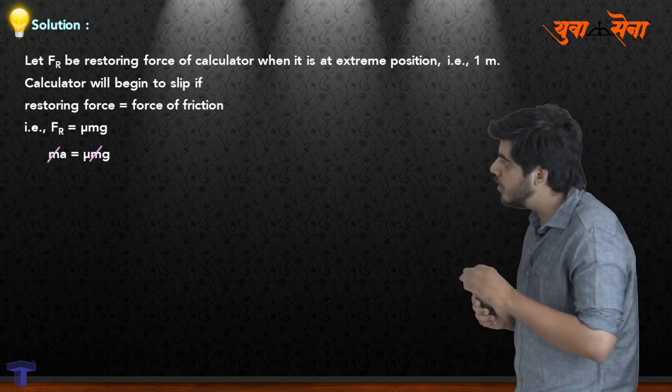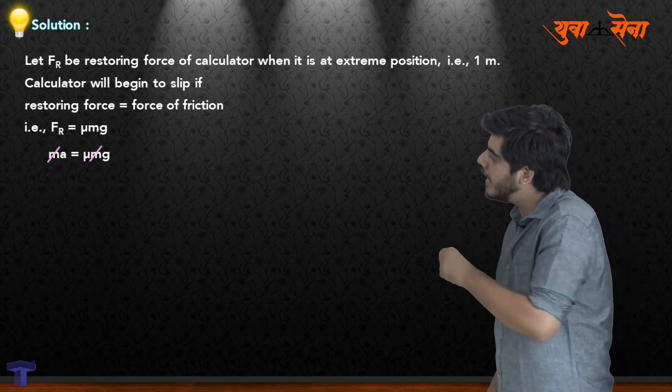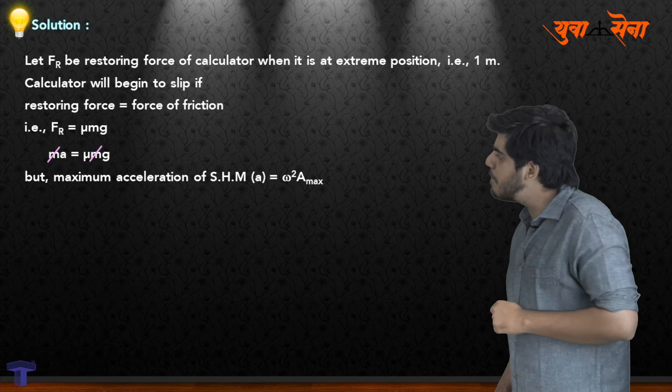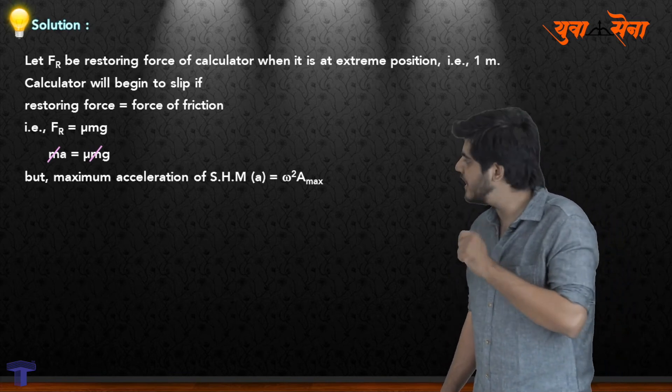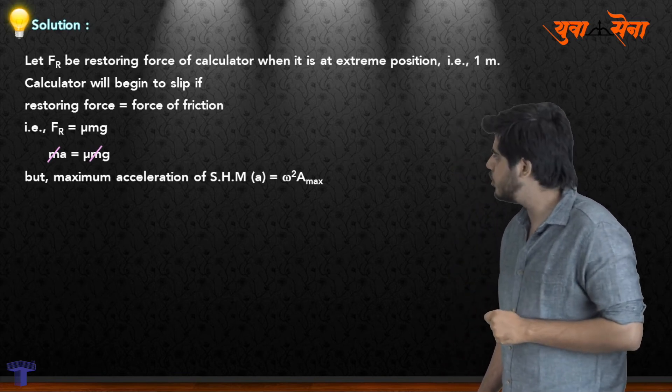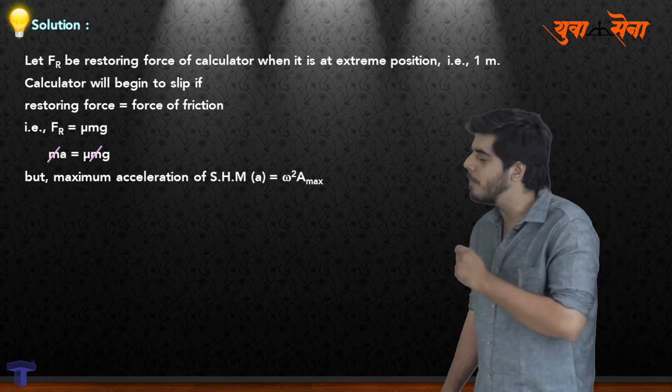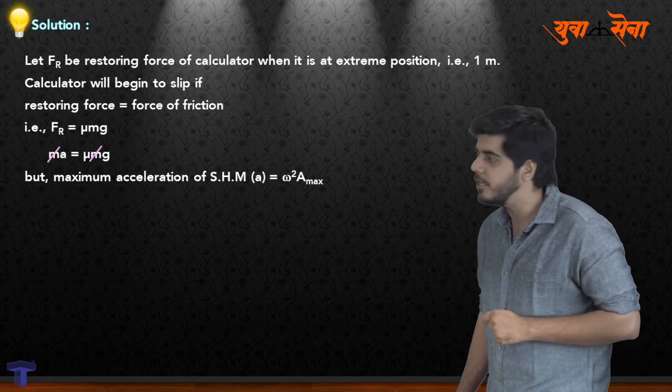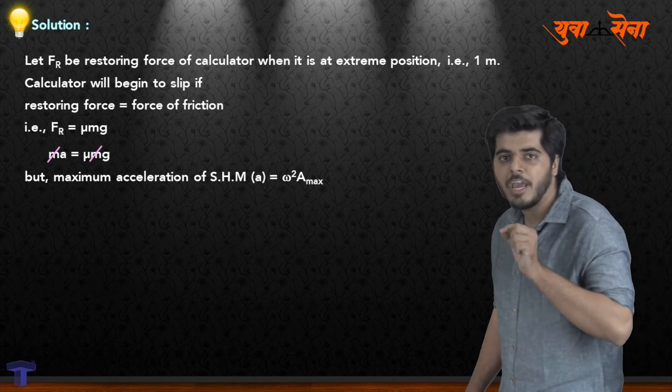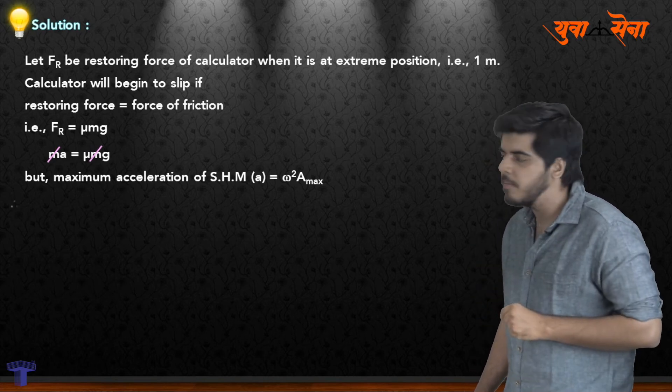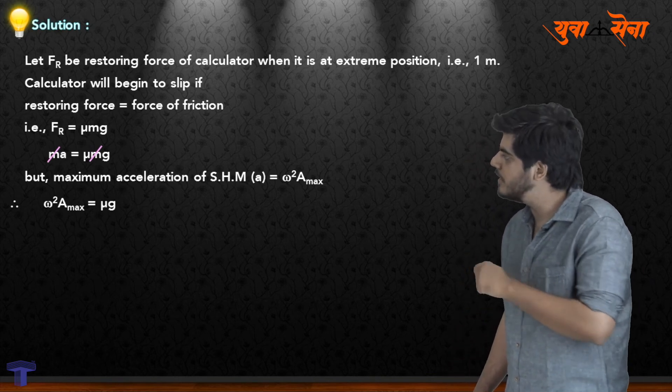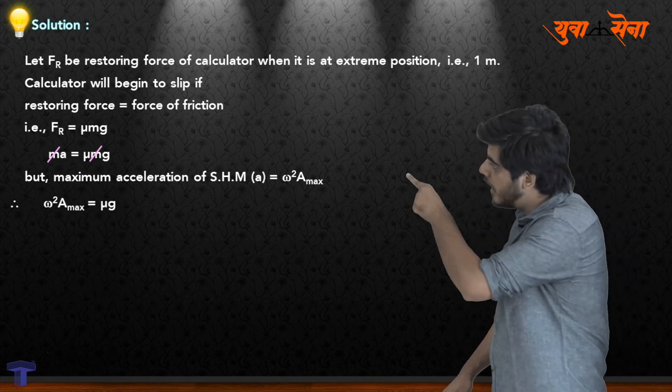The maximum acceleration of SHM, that is simple harmonic motion, is a equals omega squared times maximum amplitude. Using this formula, omega squared times maximum amplitude equals mu times g. We have now established this relation.